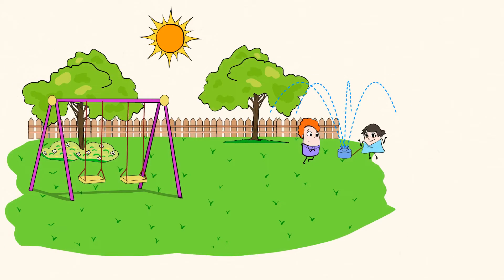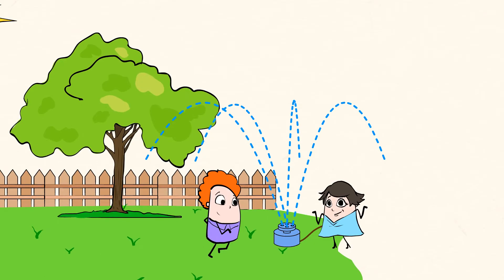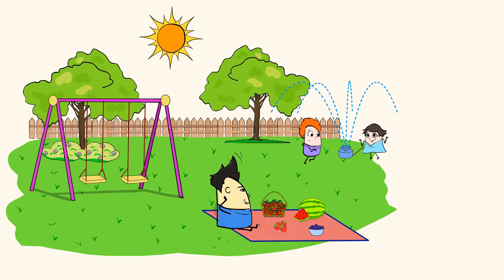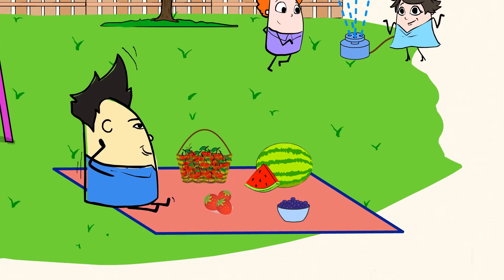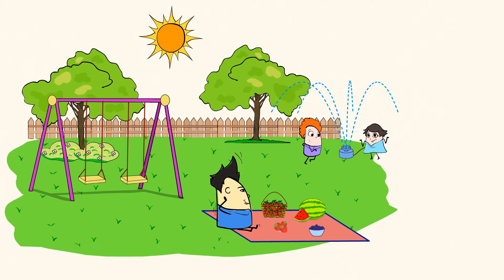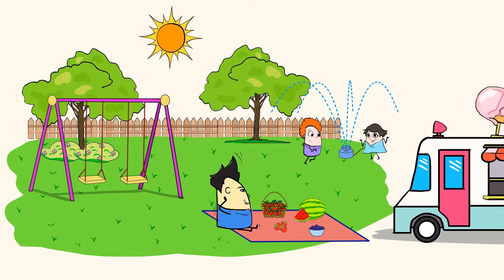That looks like a lot of fun, playing outside on a sunny day. Eric and Mia are running through the sprinkler to cool down, and Chen has brought so many fruits for their picnic. I see watermelons, cherries, blueberries, strawberries. Delicious! I think I hear the music of the ice cream truck coming, too.